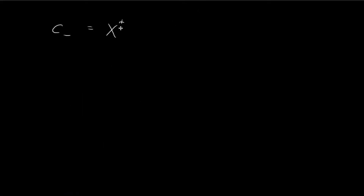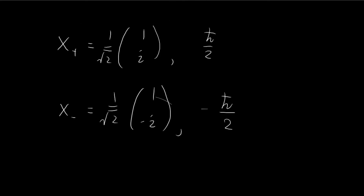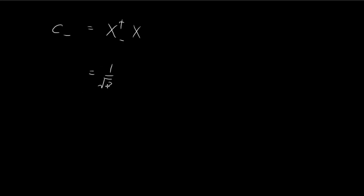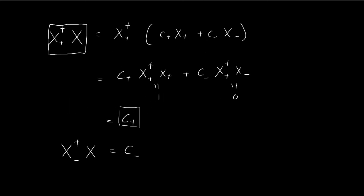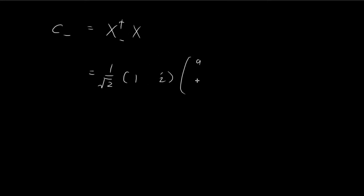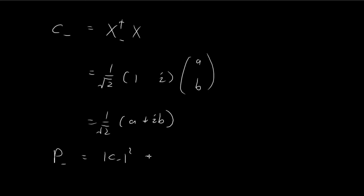For C−: take the Hermitian conjugate of the spin-down state (1/√2)(1, −i), which becomes the row vector (1/√2)(1, i), and apply it to (A, B). This gives C− = (1/√2)(A + iB). The probability of getting spin-down is |C−|² = (1/2)|A + iB|².